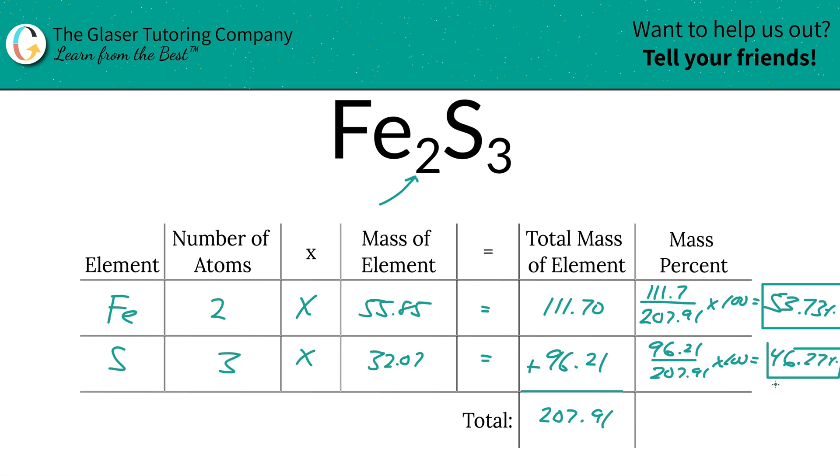And then as a simple check, you could simply add these two together, and it should equal 100. And if it doesn't... I'm not really sure what that was a combination of, but if it doesn't, then you know there might be an error somewhere.